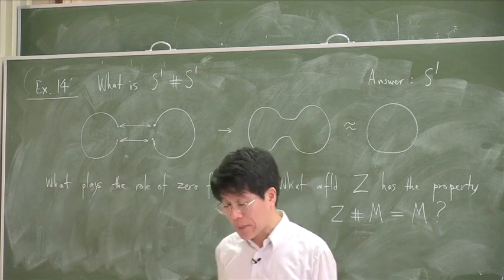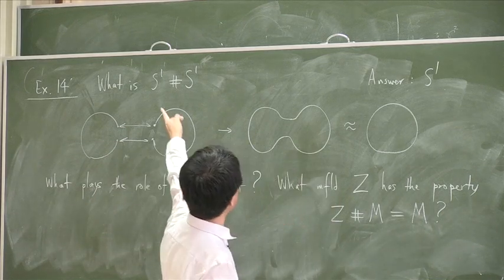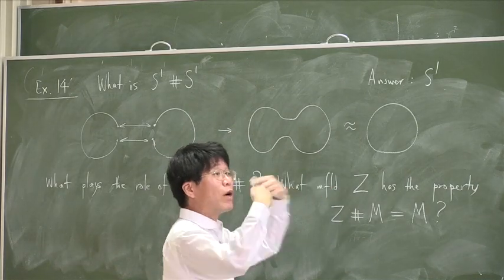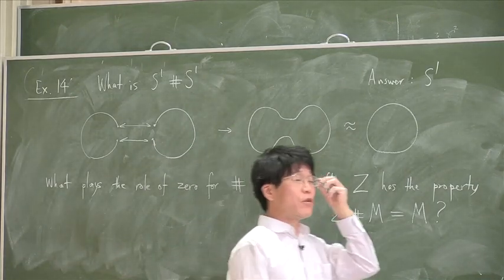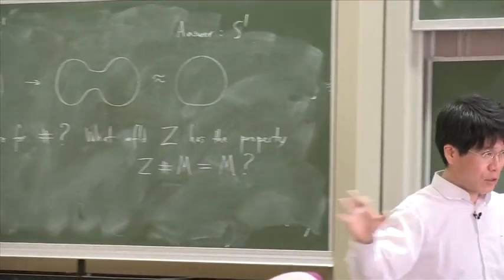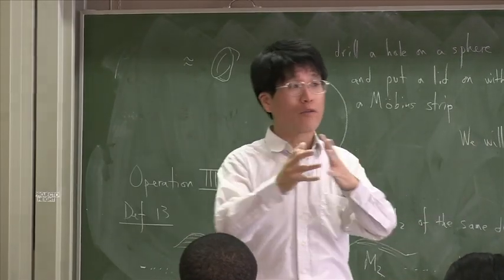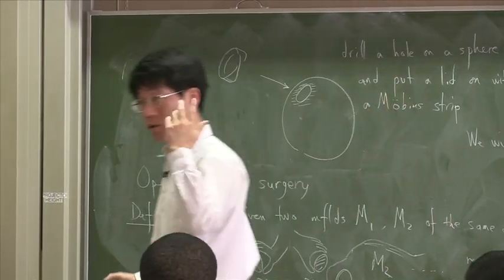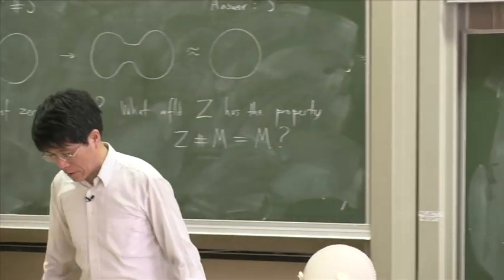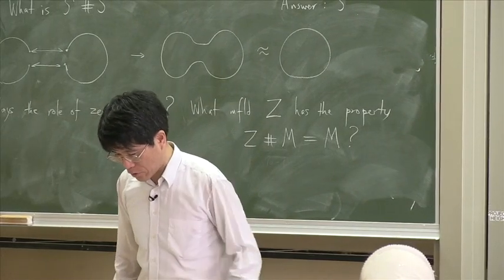Namely, what manifold, let's say, Z has the property that Z connected sum with some other manifold, is, again, the same manifold? Yeah. We can ask that question. S¹. S¹. But you see, S¹ is used in the connected sum in one dimension. If you are connecting sum, say, two dimensional manifolds, you have to S². If you do it in 3D, S³, and so on, good. You have a very good nose. Congratulations to Egypt.